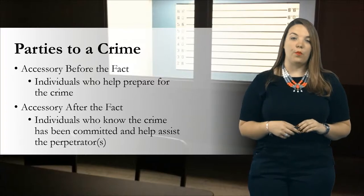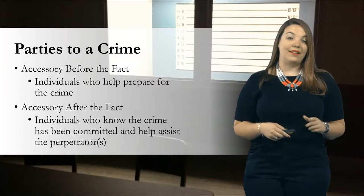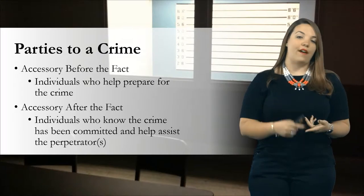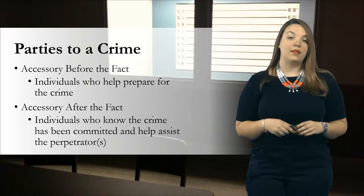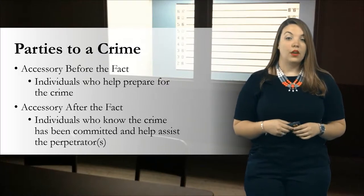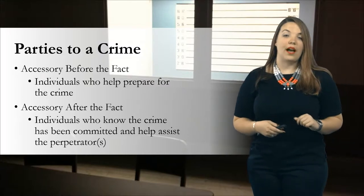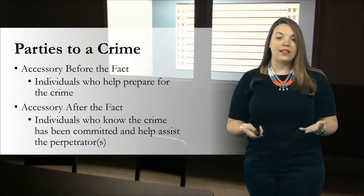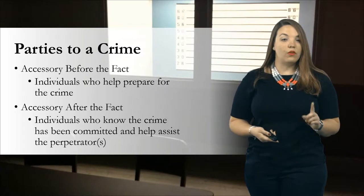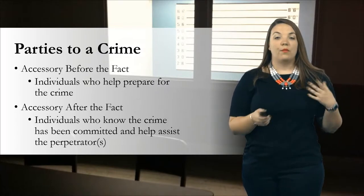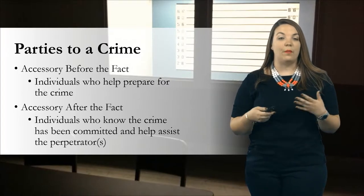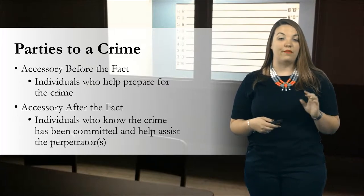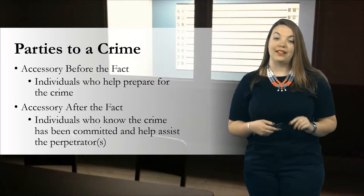We have two more classifications of co-perpetrators. My best friend and I decide we need more help — ski masks, firearms, and tools to crack the safe. She knows a guy who can get all the necessary supplies for us. Once he gives those supplies to her, he has now become an accessory before the fact. To meet this classification, you either have to help plan, provide supplies, or do something else that aids the principal actors before the crime actually takes place. It's not required that the accessory before the fact be physically or even constructively present, as it is for principal in the second degree.